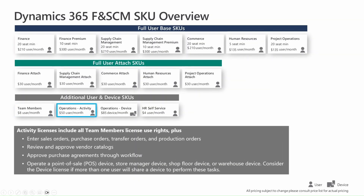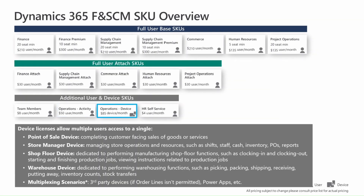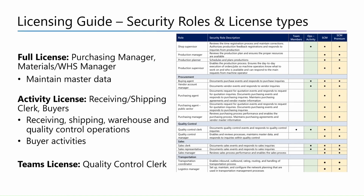For an activity user, everything from a team member is included, plus they are able to enter certain transactions and review and approve vendor catalogs. There are defined use cases within the licensing guide for activity users as well. The device license is another specific use case that meets the requirements of shared access in shared spaces — such as warehouse devices, shop floor devices, or point-of-sale terminals where multiple people may use the same device to perform limited defined functions, allowing them to utilize the device use case instead of requiring individual licenses for each user.